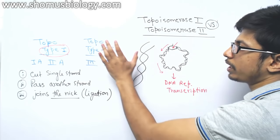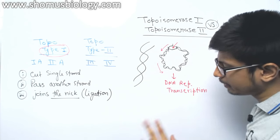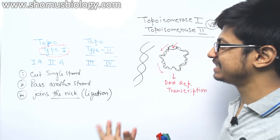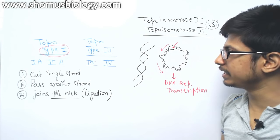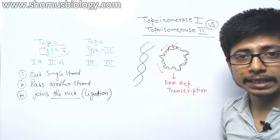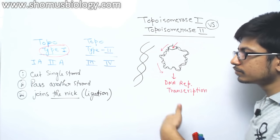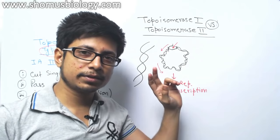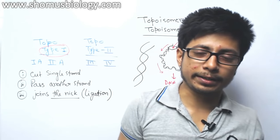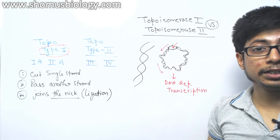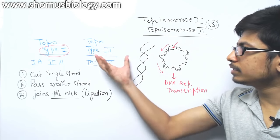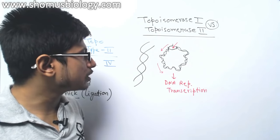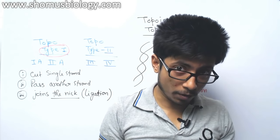On the other hand, topoisomerase type 2 — one example in bacteria is DNA gyrase. In E. coli, DNA gyrase is required during the process of producing negative supercoiling and during DNA replication. Topoisomerase type 2, exemplified by gyrase, has more functionality to perform.